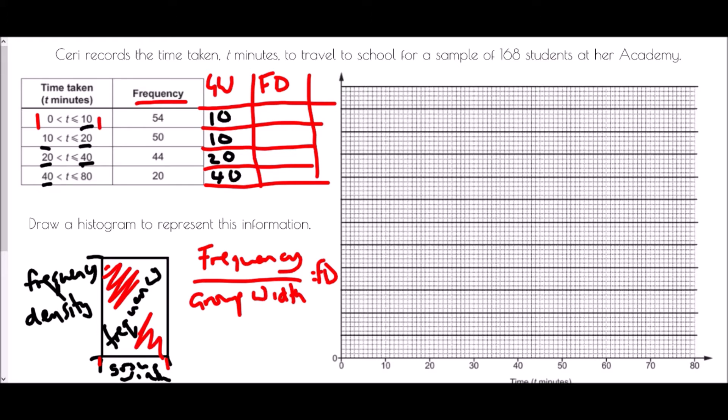Now the frequency density is frequency divided by group width, so we're going to divide those two numbers. So 54 divided by 10 would be 5.4, 50 divided by 10 would be 5, 44 divided by 20 would be 2.2, and 20 divided by 40 is 0.5.